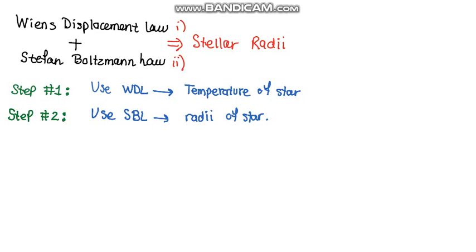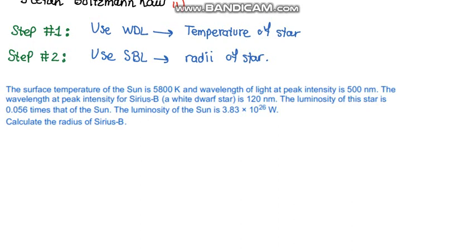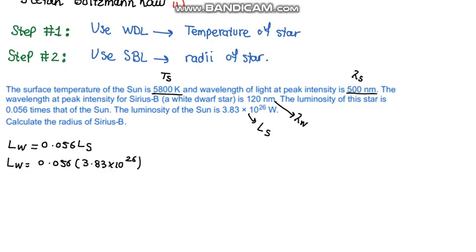Let's see an example. It says that the surface temperature of the Sun is 5800 Kelvin, so the temperature of the Sun is given, and the wavelength of the light at peak intensity is 500 nanometers. So lambda S is given. The wavelength at peak intensity for Sirius B, a white dwarf star, is 120 nanometers. So the lambda W is given. The luminosity of this star is 0.056 times that of the Sun, so that means that the luminosity of the white dwarf is equal to 0.056 times the luminosity of the Sun. And it says the luminosity of the Sun is 3.83 times 10 to the power 26 watts, so what we can do is plug in the value and find the luminosity of the white dwarf. So our objective is to find the radius of Sirius B, the white dwarf star.